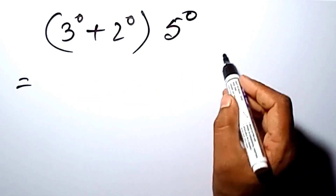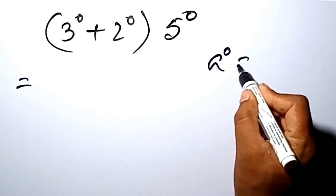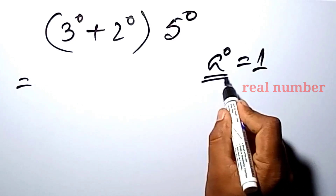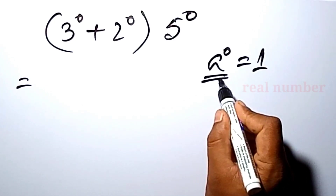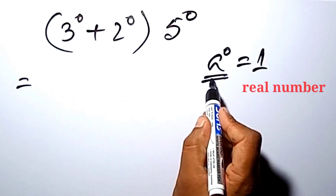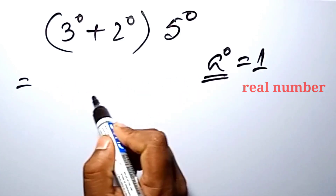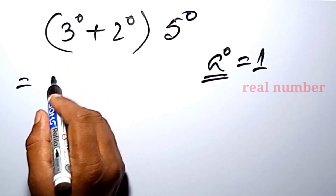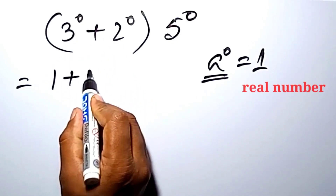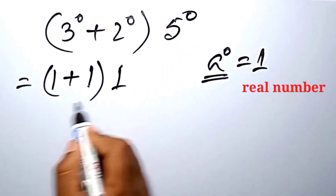We know a to the power 0 is equal to 1 if a is a real number. So every real number to the power 0 is equal to 1. Therefore, 3 to the power 0 is equal to 1, and 2 to the power 0 is equal to 1, and 5 to the power 0 is equal to 1.